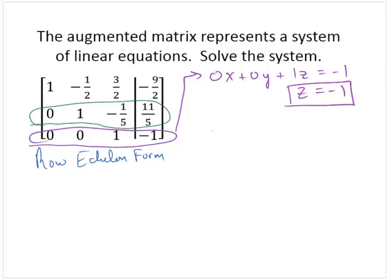That equivalently says y minus 1/5 z is 11/5. Substituting, y minus 1/5 of negative 1 equals 11/5. So y plus 1/5 is 11/5. Subtracting 1/5, y equals 10/5, which is 2.